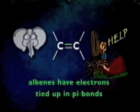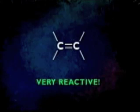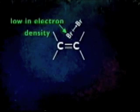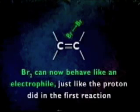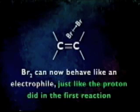Alkenes have electrons tied up in pi bonds, and that makes them very reactive. When a Br2 molecule approaches a source of electron density such as an alkene pi bond, the electrons in the sigma bond of the Br2 molecule are repelled toward one end of the molecule, so the bond becomes polarized. One end of the Br2 molecule becomes an electrophile — low in electron density — because its electrons are hanging out on the other end. The bromine molecule can now behave like an electrophile, just like the proton did in the first reaction.